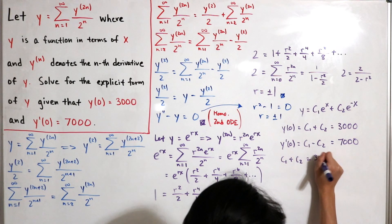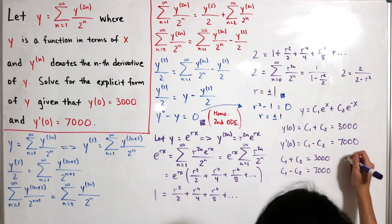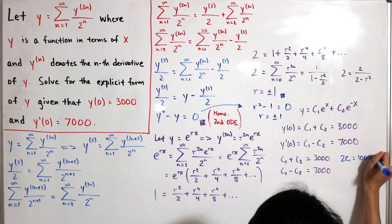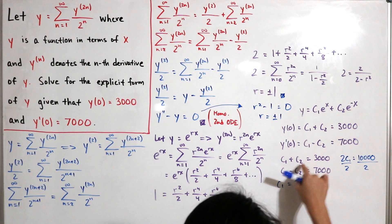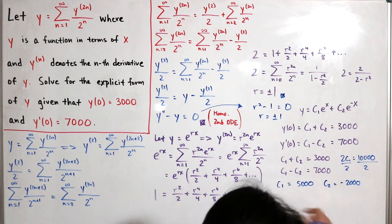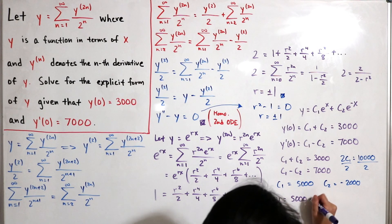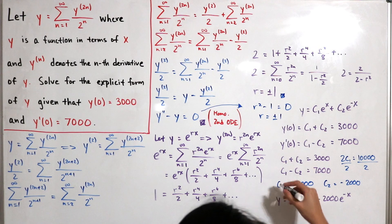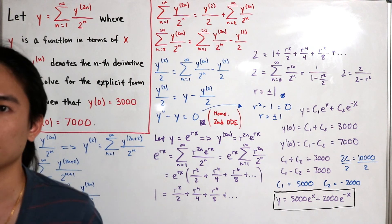We now have the system: C1 + C2 = 3000 and C1 - C2 = 7000. Adding both equations gives 2*C1 = 10000, so C1 = 5000. Substituting back gives C2 = -2000. The final explicit solution is y = 5000*e^x - 2000*e^(-x).